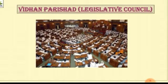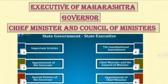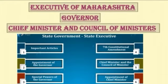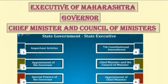The executive of Maharashtra consists of the governor, chief minister, and council of ministers. The president is the nominal head at the central level, while the governor is the nominal head at the state level. The governor is appointed by the president and holds office during the pleasure of the president. The governor also enjoys certain legislative powers. For example, the bills passed by Vidhan Sabha and Vidhan Parishad are converted into laws only after receiving the assent of the governor. The governor has the right to summon the session of the state legislature. When the legislature is not in session but the need arises to make a law, the governor can issue an ordinance for the same.